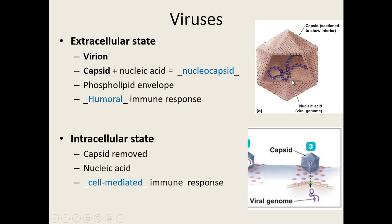When in an extracellular state, we can call them virions or nucleocapsids. Some viruses do have a phospholipid envelope, very much like a cell membrane — they don't make it, they steal it from their host cell when released. Because they haven't gotten inside our cells yet, it's our humoral immune system that recognizes and responds to viruses at this stage. When they get inside our cells, they are in the intracellular state — the capsid is removed, we just need the genetic material inside, and it's the cell-mediated immune response that gets triggered.